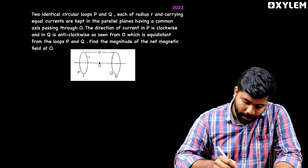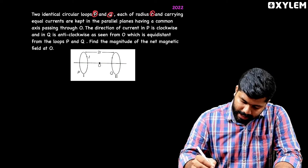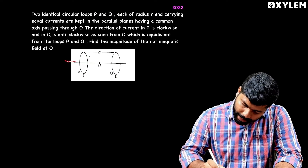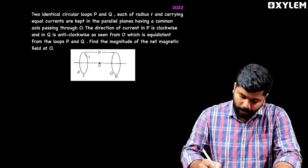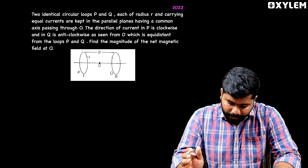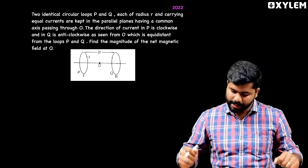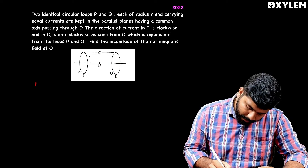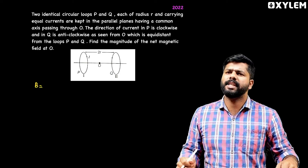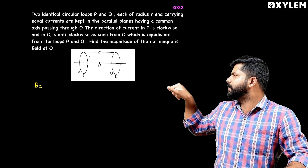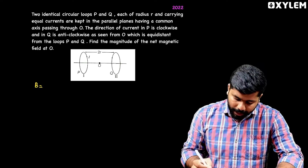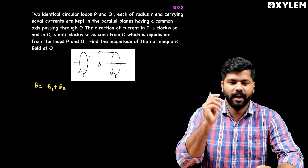Third question: Two identical circular loops P and Q, each of radius r, carrying equal currents I, are kept in parallel planes with a common axis passing through O. The direction of current in P is clockwise and in Q is anticlockwise as seen from O. O is equidistant from loops P and Q. Find the magnitude of the net magnetic field at O. The direction of current in P is clockwise — moving away from the observer. In Q it is anticlockwise — towards the observer. So the magnetic field from both loops is in the same direction.